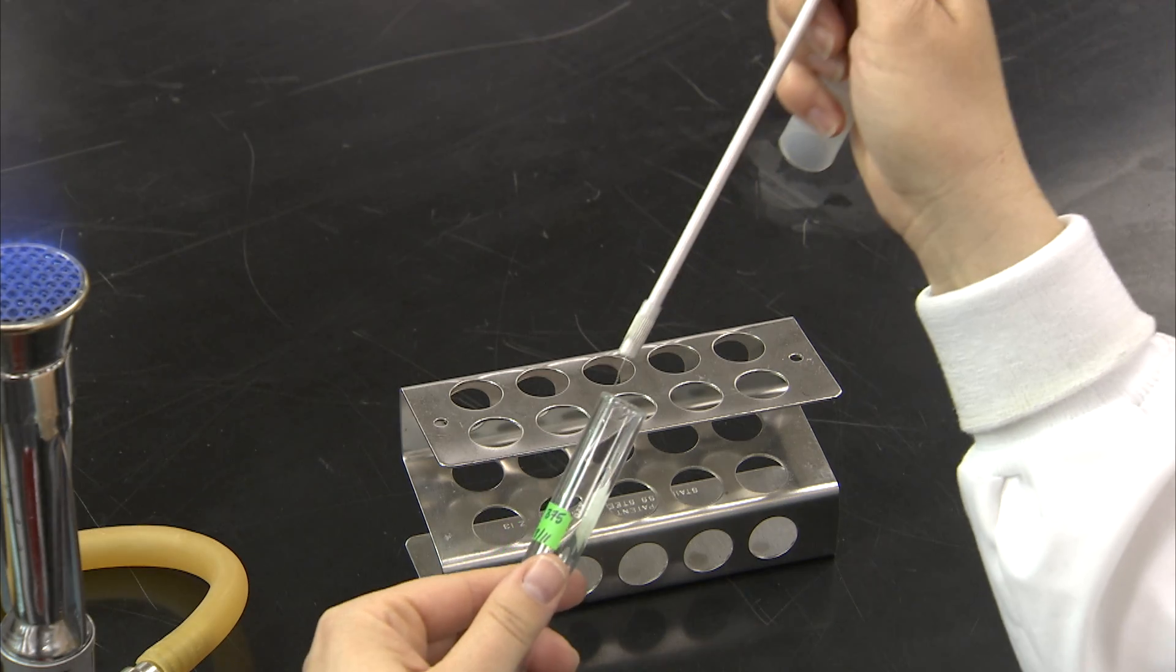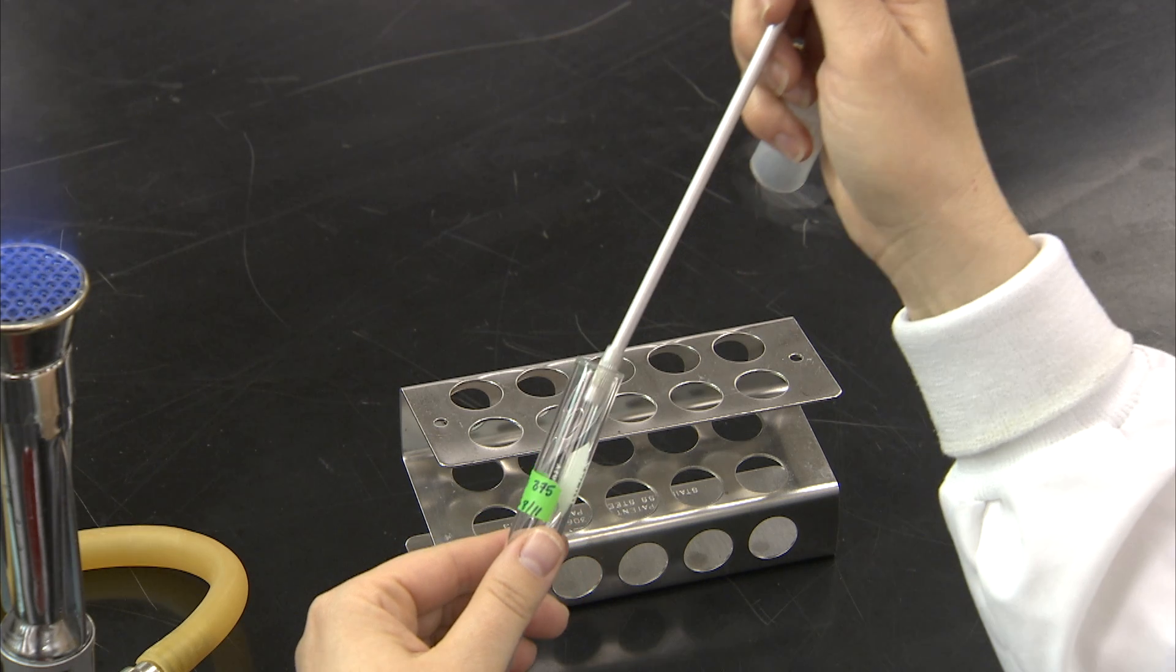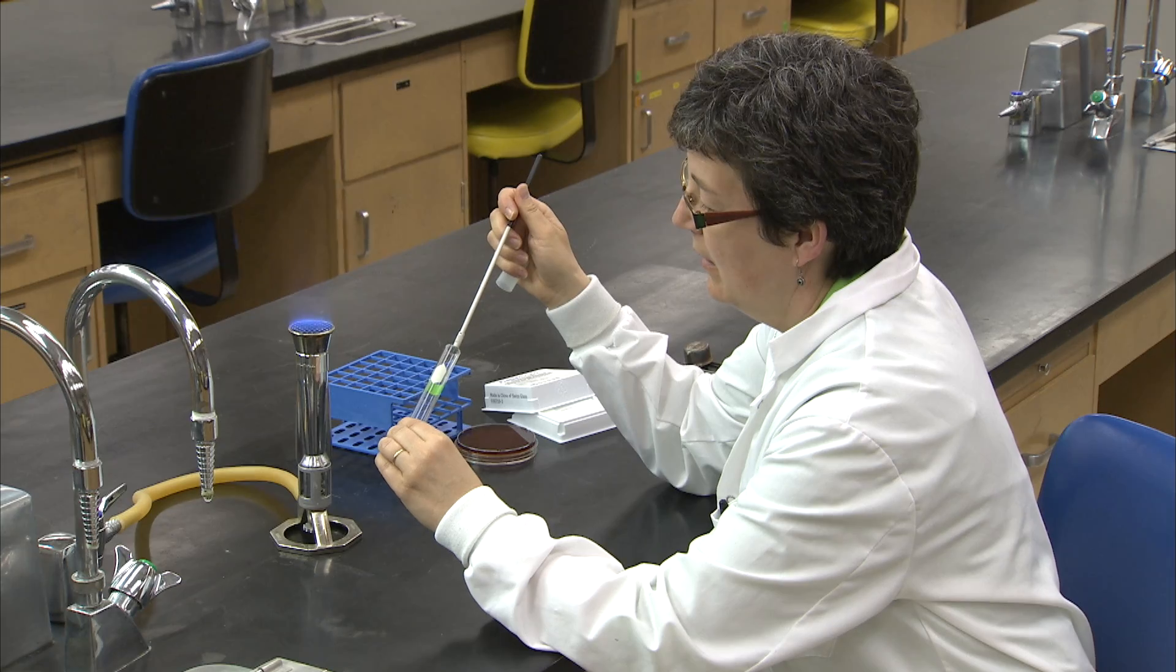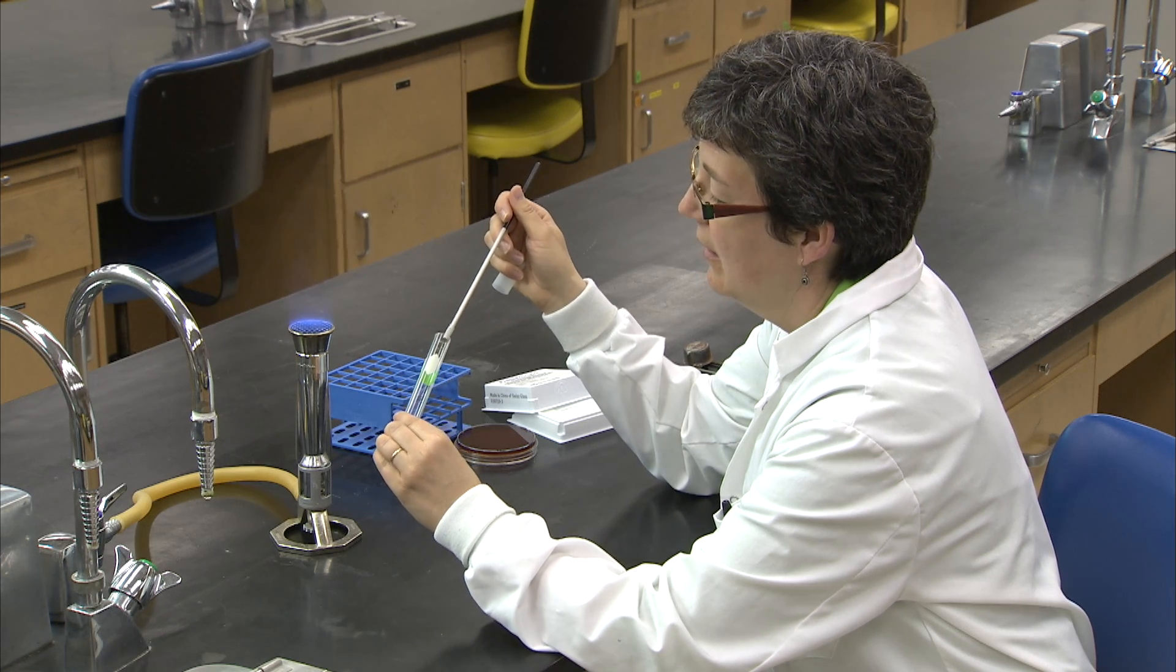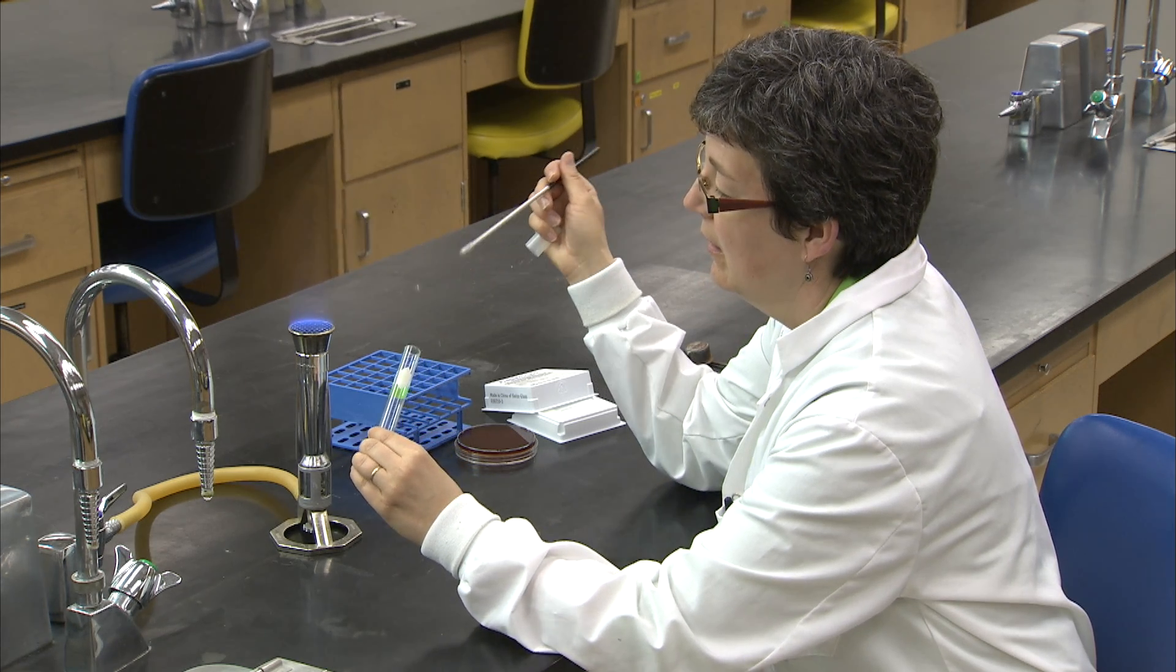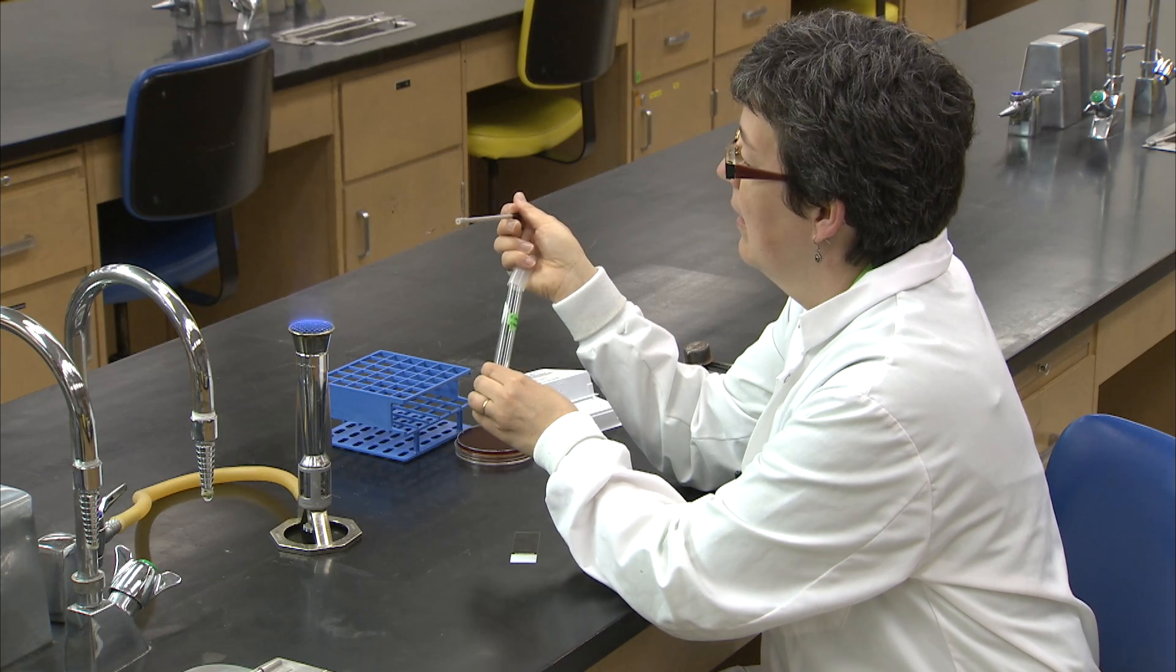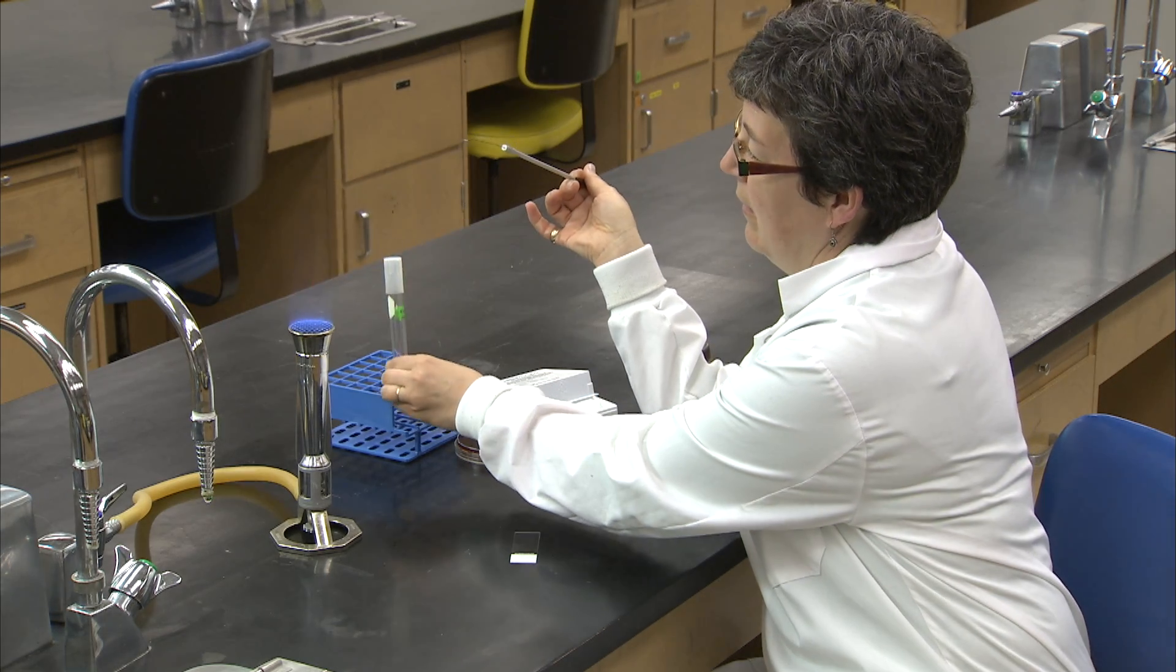Without putting down the cap, the loop is used to draw out a drop of culture from the tube. If the loop is touched to the side of the tube, you may lose the drop, so be careful not to touch the sides. Once again, the mouth of the tube is flamed and then capped and set aside.